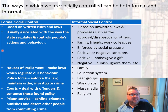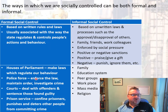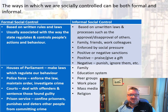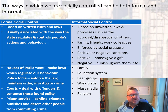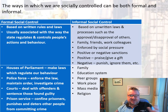How we are socially controlled can also be both formal and informal. Formal social control involves written rules, usually associated with the state — Parliament making laws, the police enforcing them, the courts, the prison service. Informal social control involves unwritten laws and processes: how we behave with family and friends, social pressure, sanctions, praise, family, education, and peer groups. So we are controlled both formally and informally, and these are the different agencies that carry it out.